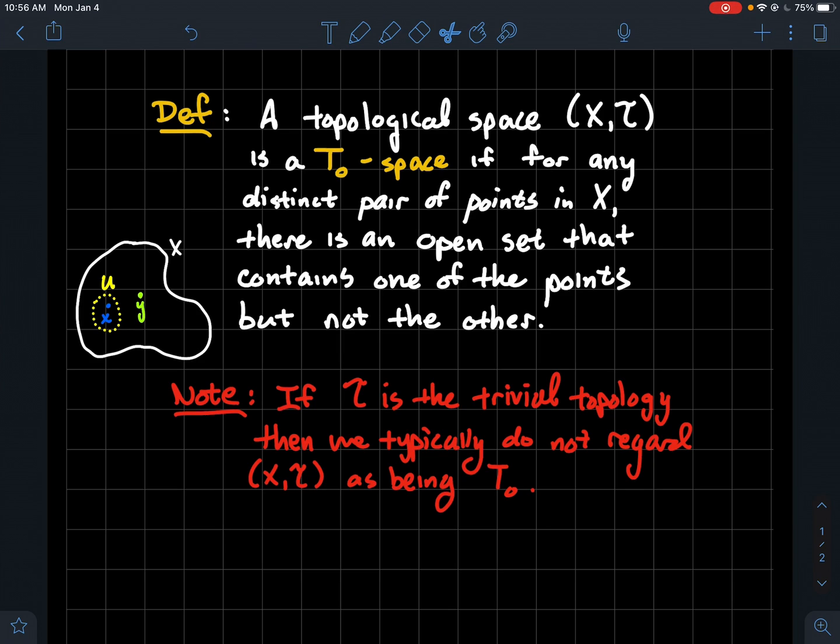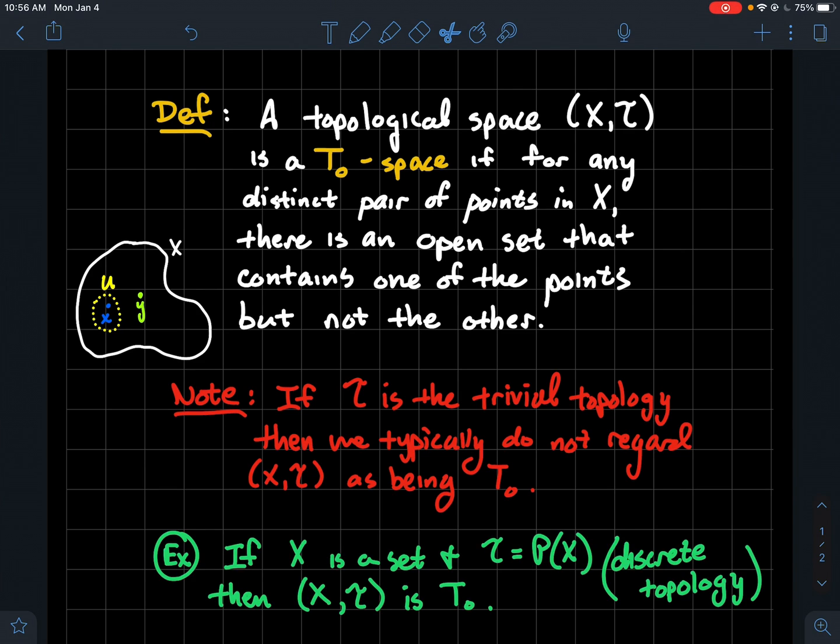One more note though: if τ is the trivial topology then we typically do not regard (X,τ) as being T₀. In particular if τ is the trivial topology and you have more than one point then that's not a T₀ space by convention. So let's get into some examples.